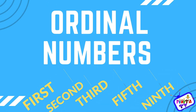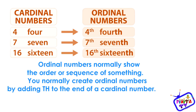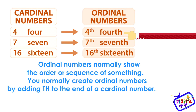Ordinal numbers. Ordinal numbers normally show the order or sequence of something. You normally create ordinal numbers by adding TH to the end of a cardinal number.